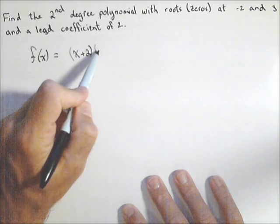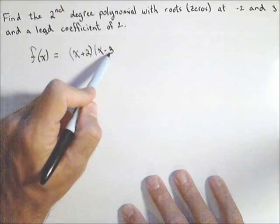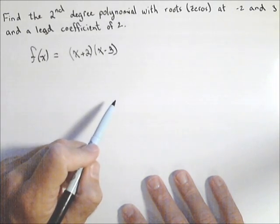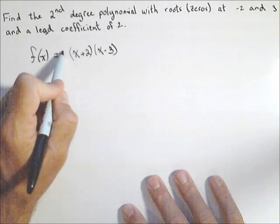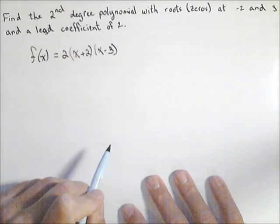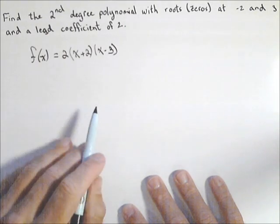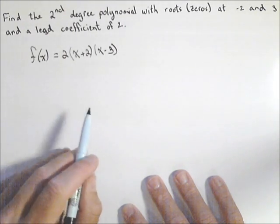If three is a zero, then x minus three has to be a factor. The last thing we know is we need a lead coefficient of two, so we can put a two out there. We can keep this in factored form.